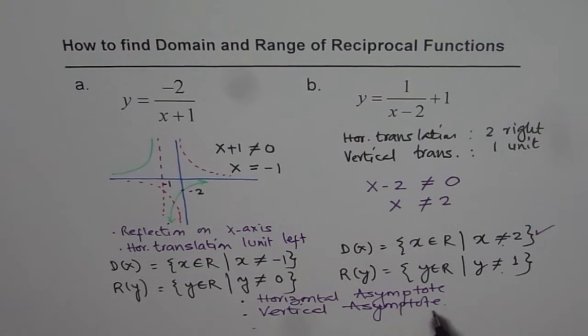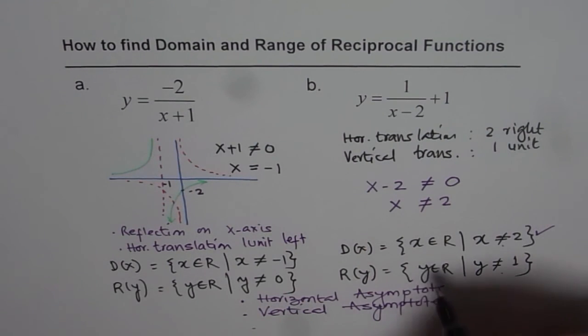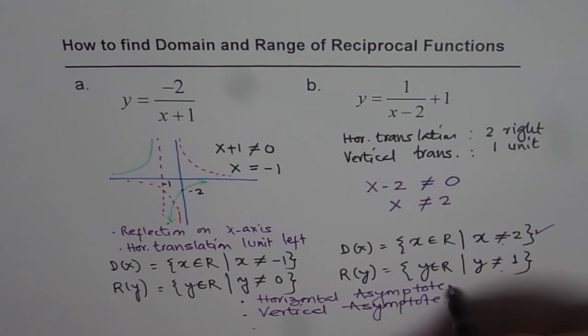A function can only approach horizontal asymptote, but it cannot be there. So that gives you restrictions with range. So horizontal asymptote gives you restrictions for the range. So this is for the range.